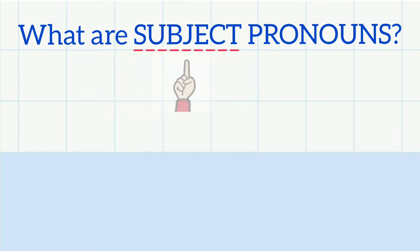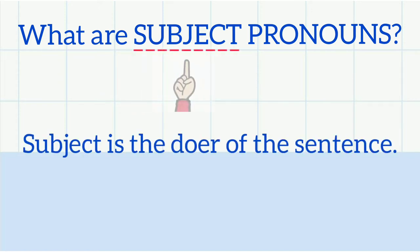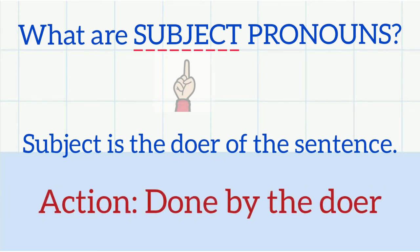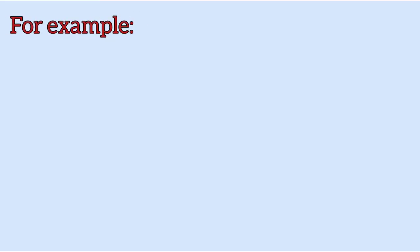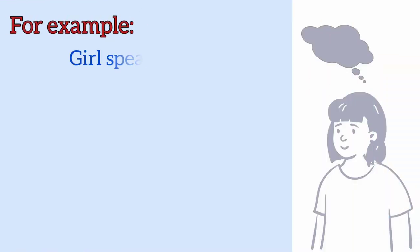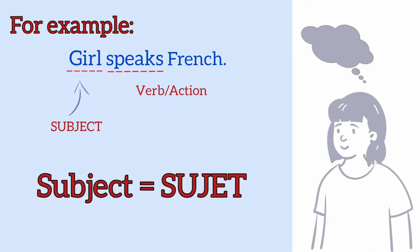So friends, what are subject pronouns? Let us try to understand what are subjects first. Subject is the doer of the sentence. In a sentence, the action is done by the doer. For example, girl speaks French. In this sentence, girl is the subject, speaks is the verb or the action done by this girl. In French this is called sujet.